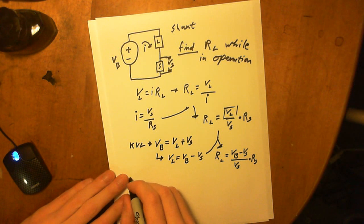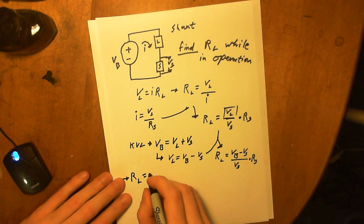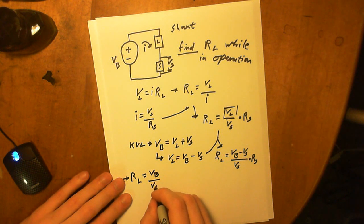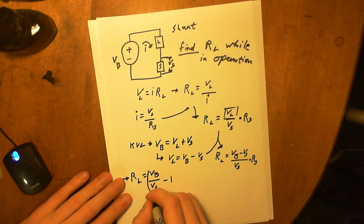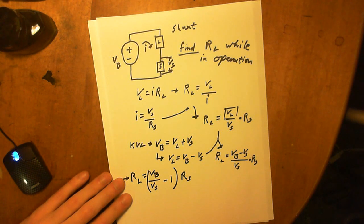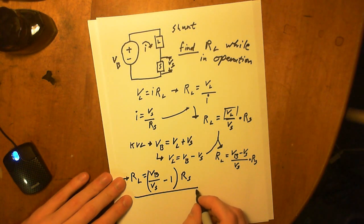Rearranging that expression: resistance of the load equals the supply voltage over the shunt voltage, minus 1 — factoring out — times the resistance of the shunt.